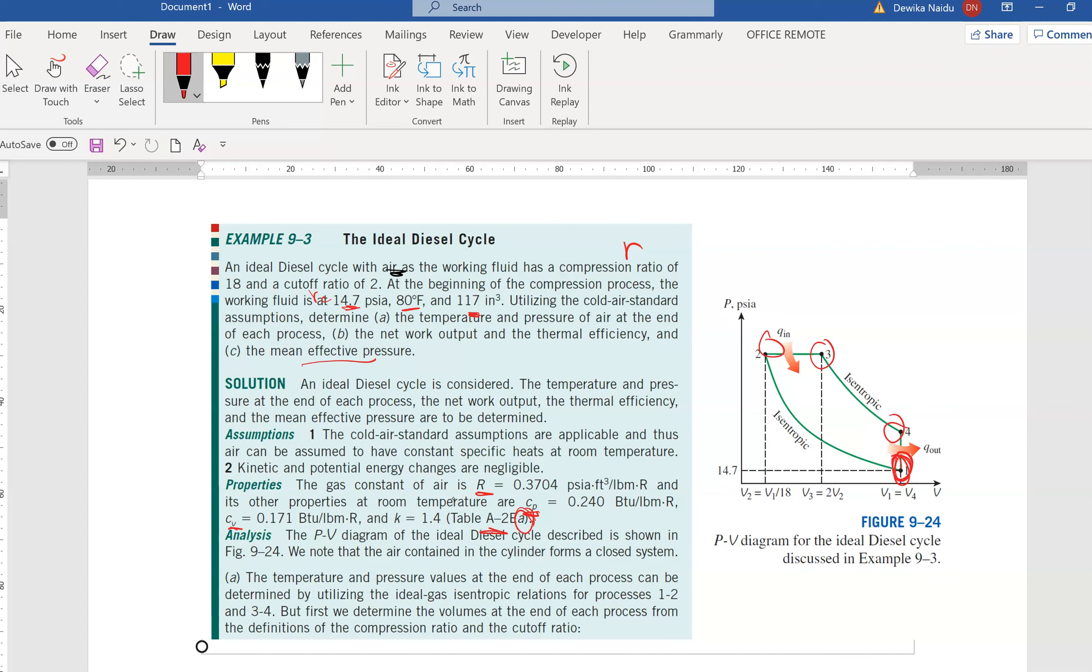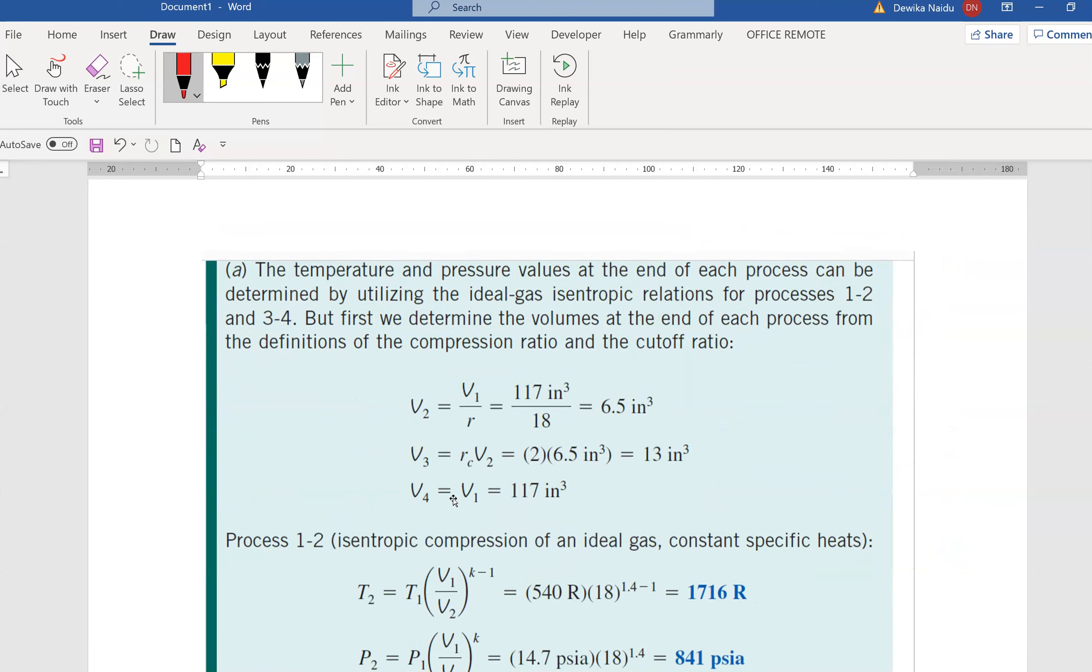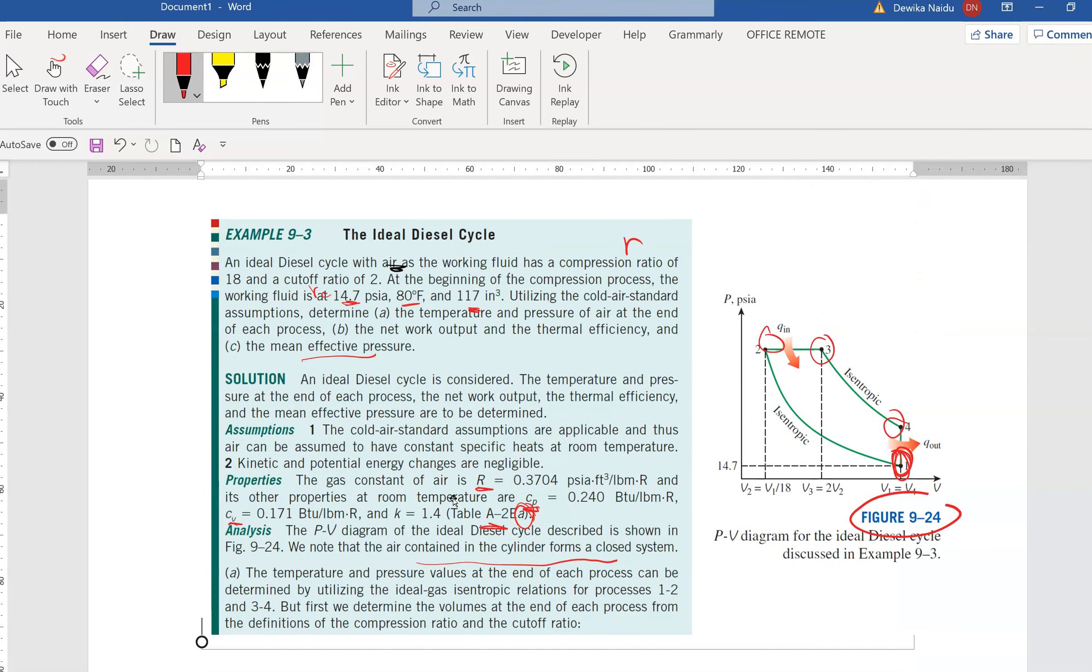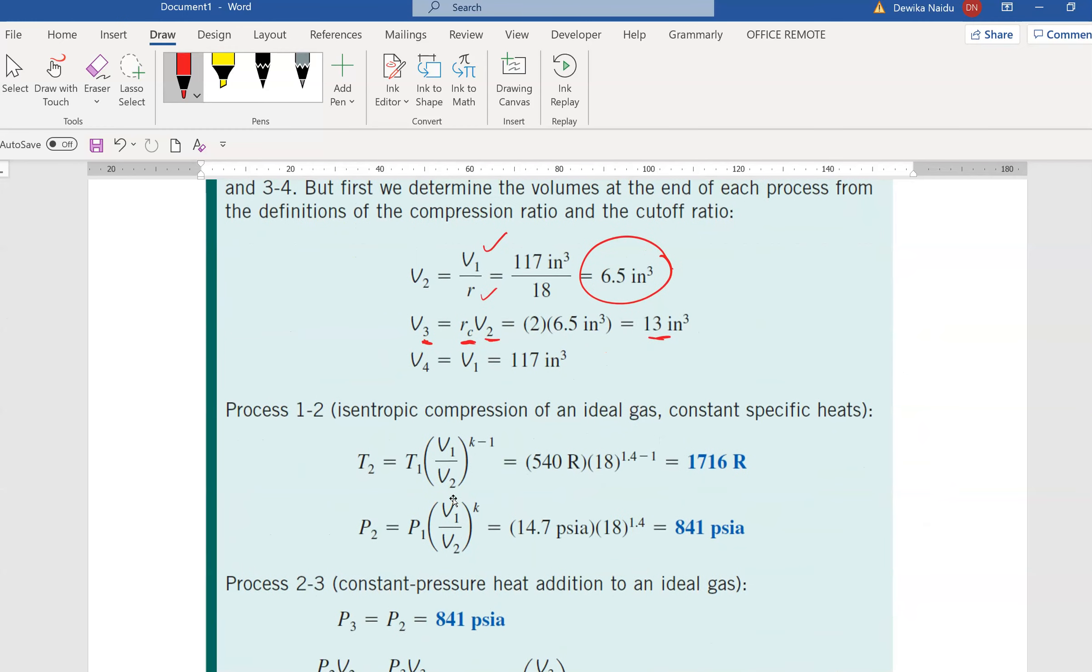We have the PV diagram in the idle diesel cycle described in figure 9.24. The information that is given is V1 is given and R is given, so you can actually find V2. From the V2, the compression ratio RC, you can find V3. This goes like a jigsaw puzzle. V4 and V1 is the same value because it is actually isochoric, same volume. Finally now you have managed to find your V1 given, V2 done, V3 done, and V4 is the same as V1. So the volumes are all settled.